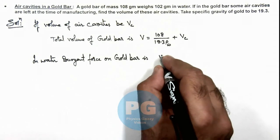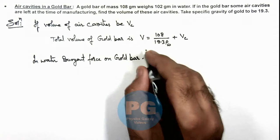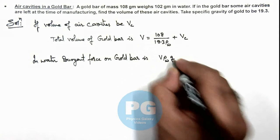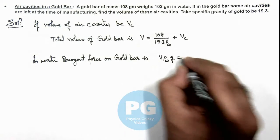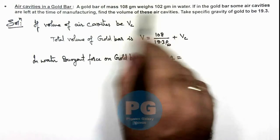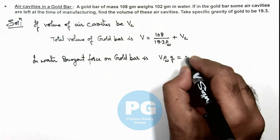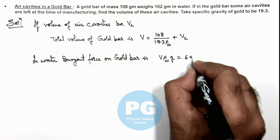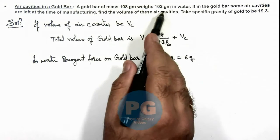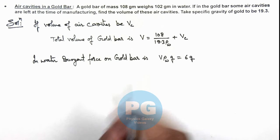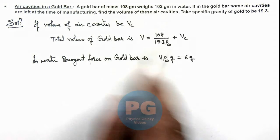V, total volume of the gold bar, multiplied by ρ of water, multiplied by g. And this should be equal to the difference of the two weights which we are measuring, that can be written as 6 multiplied by g, where 6 is the difference in the weight of the gold bar in water as well as in air.